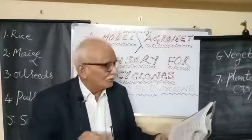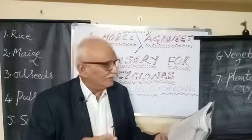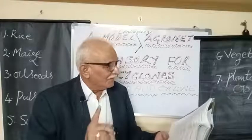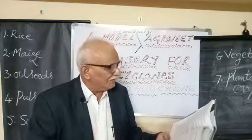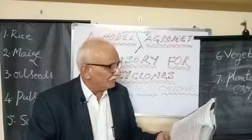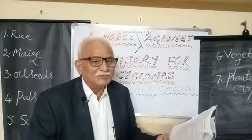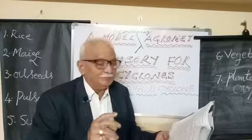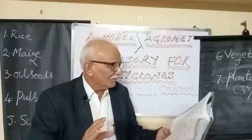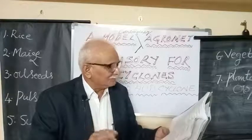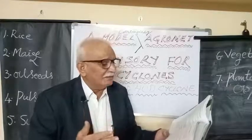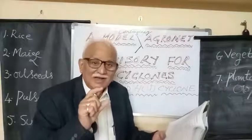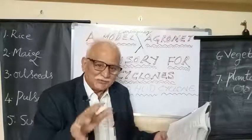We then understood the life cycle of a tropical cyclone, which has four phases: the first is the formative stage, second is the immature stage, third is the mature stage, and fourth is the decay stage. As far as the structure of cyclone is concerned, it has an eye, a wall cloud region, and an outer periphery.